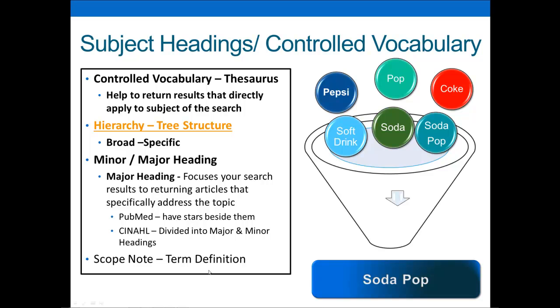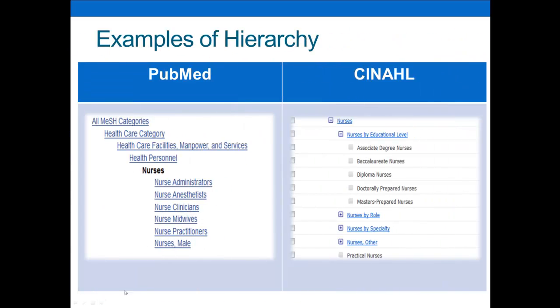Another thing to keep in mind is they also are in a hierarchical tree structure going from broad to specific. You can see that in the examples here, this one from PubMed on the left and this one from CINAHL on the right. You'll notice that each of these are discussing nurses and that there's a hierarchical structure to them. You'll see nurse here, meaning it's broad in nature, and then more specific types of nurses here. Just the same thing in CINAHL. You'll see nurses at the top and then as you go down the tree, there's different or more specific types of nurses addressed.